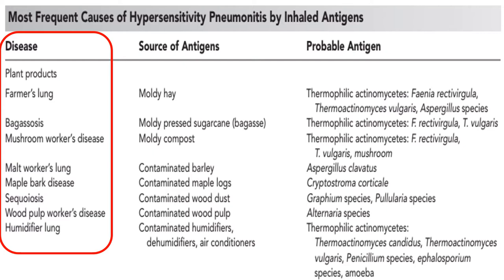Diseases caused by plant products include farmer's lung, bagassosis, mushroom worker's disease, malt worker's lung, maple bark disease, sequoiosis, wood pulp worker's disease, and humidifier lung.